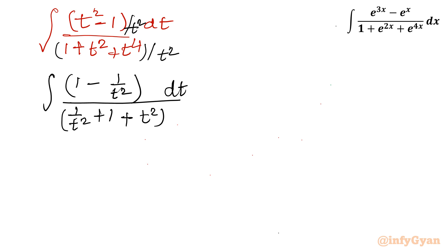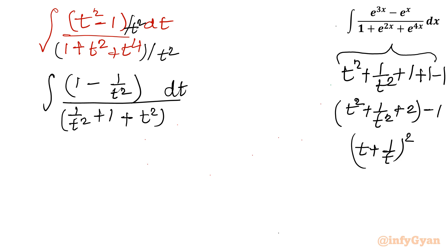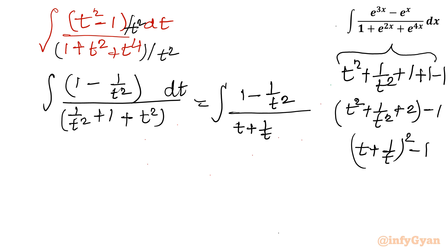After dividing by t², the numerator becomes (1 - 1/t²). Now observing the denominator only: it is t² + 1/t² + 1. If I add and subtract 2 and collect terms, I can write t² + 1/t² + 1 as (t + 1/t)² - 2 + 1 = (t + 1/t)² - 1. So the integral becomes the integration of (1 - 1/t²) / [(t + 1/t)² - 1] dt.